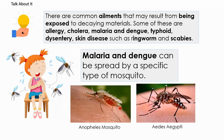Malaria and dengue can be spread by a specific type of mosquito. The Anopheles mosquito is known to spread malaria, while Aedes aegypti is known to spread dengue.